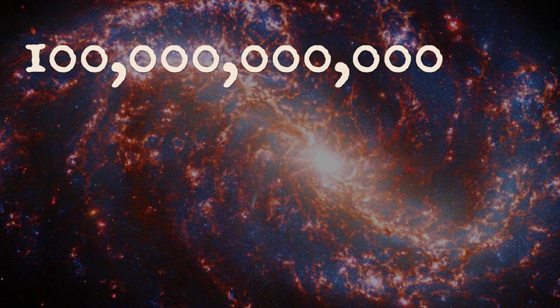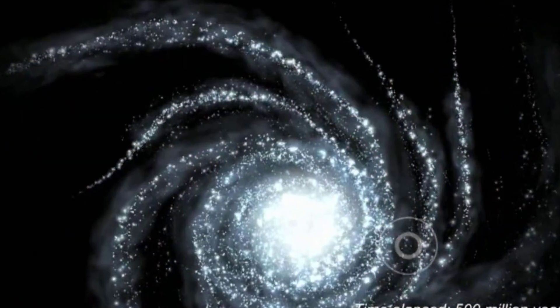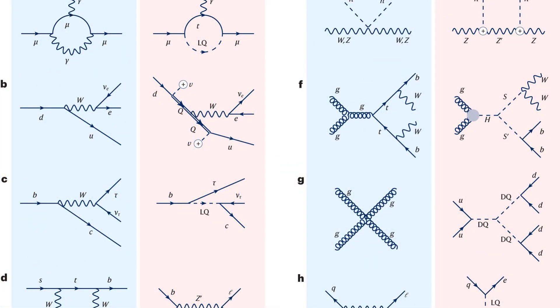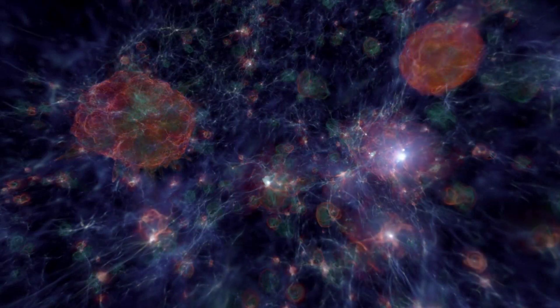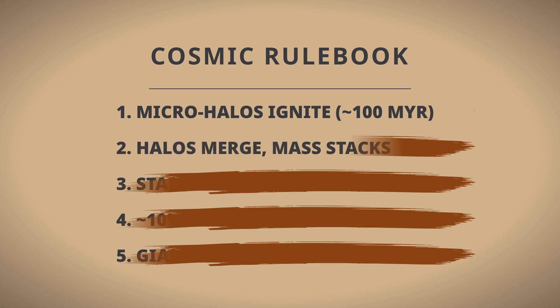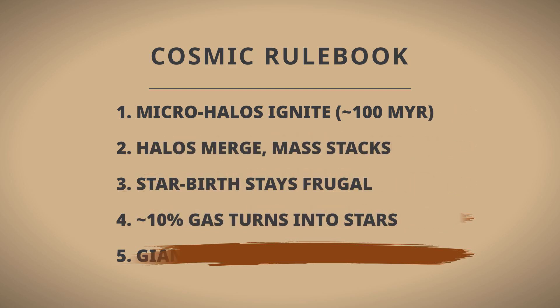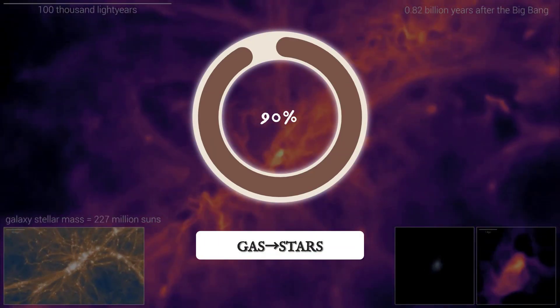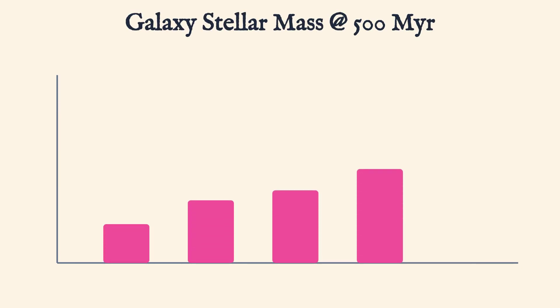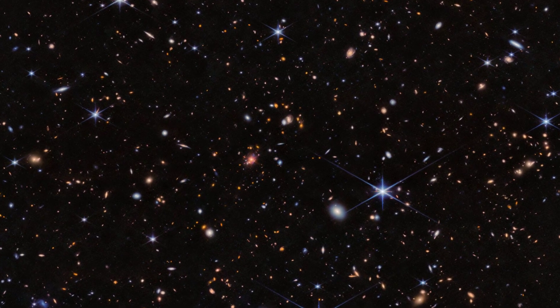Some tipped the scales at over 100 billion solar masses, putting them in the same weight class as the Milky Way. That's not supposed to happen until much later. The standard model says you can't get that much mass, that quickly, without breaking the laws of cosmic assembly. It's like checking a recipe that calls for a slow simmer and opening the oven to find a five-course meal already plated. The real kicker is the way these galaxies seem to skip steps. Lambda-CDM predicts hierarchical growth. Small halos merge, stars form slowly, and only a fraction of gas becomes stars. Yet Webb's ancient giants appear to have converted gas into stars with record-setting efficiency. Instead of a slow climb, it's a leap straight to the top.